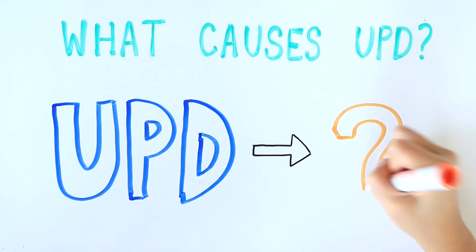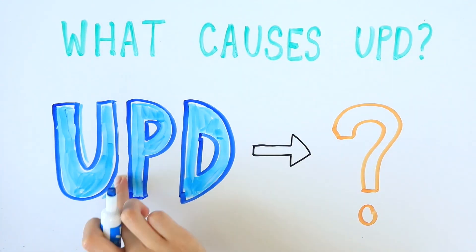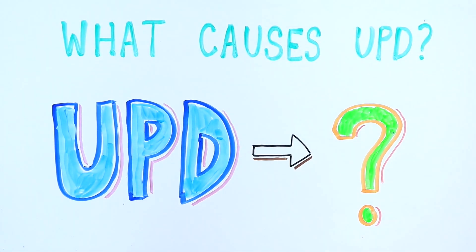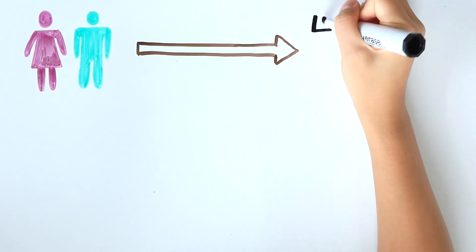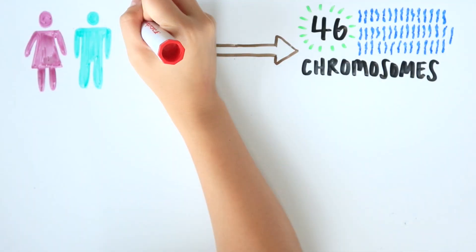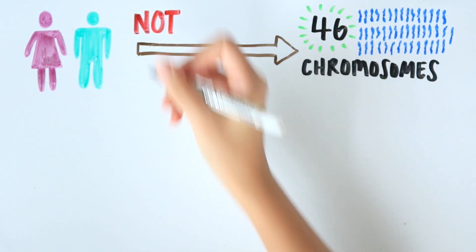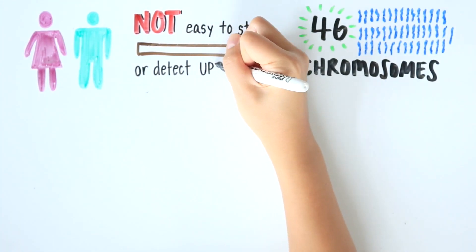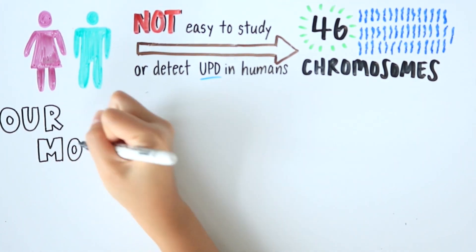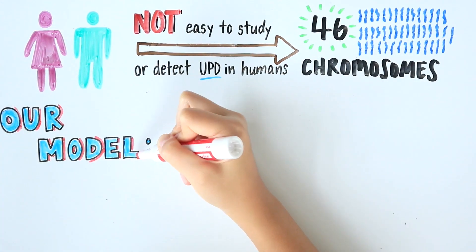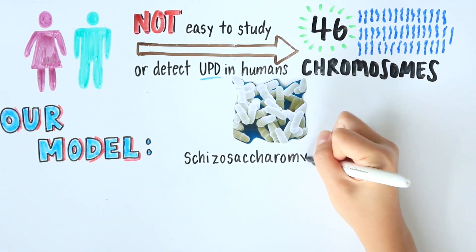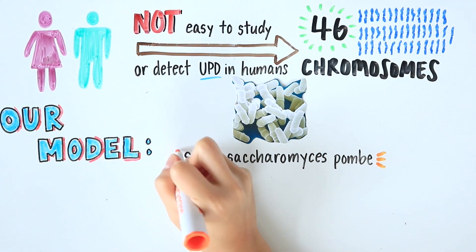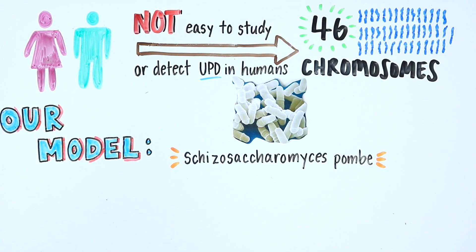Despite its clinical importance, the molecular factors that trigger UPD have remained unknown. Because cells affected by UPD contain the same number of chromosomes as normal cells, the phenomenon is not easy to study and detect in humans. However, by engineering genetic assays in the fission yeast S. pombe, we were able to detect UPD, which led to the discovery of the first causative factors ever identified for UPD.